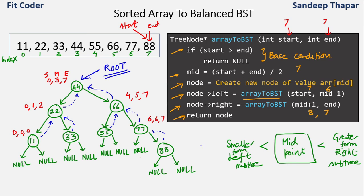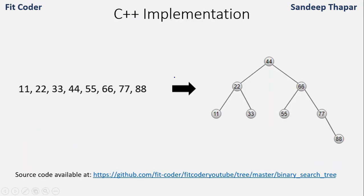By recursively splitting the array into two parts we are able to create this balanced binary search tree. The time complexity of this algorithm is O(n) because we are visiting all nodes of the array. Now that we understand how the algorithm works, let's look at the implementation. All source code is available in my GitHub repository — the link is in the description.